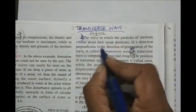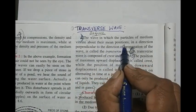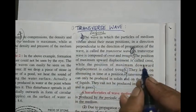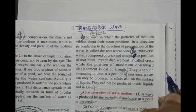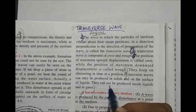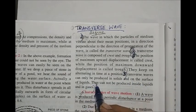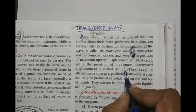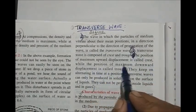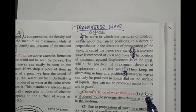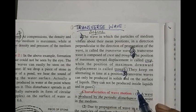Second point is the definition: a wave in which particles of a medium vibrate about their mean position in a direction perpendicular to the direction of propagation of the wave. Third point: transverse waves can only be produced in solids and on the surface of liquids. Fourth point: position of maximum upward displacement is called crest and position of maximum downward displacement is called trough. Write this difference — four points — in your notebook.